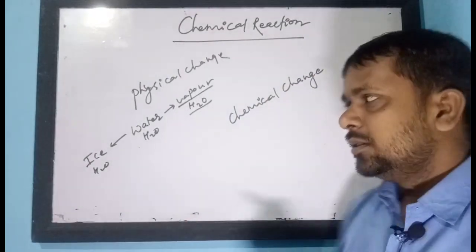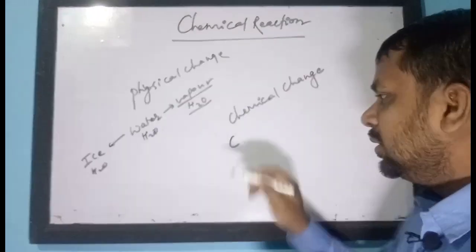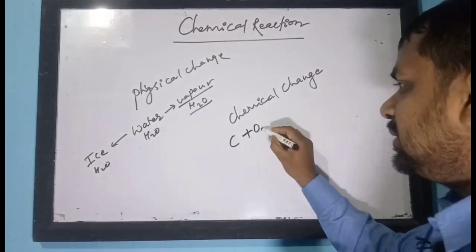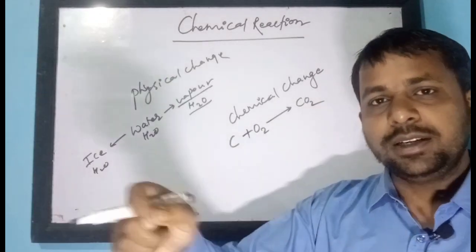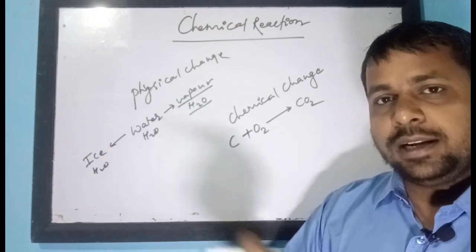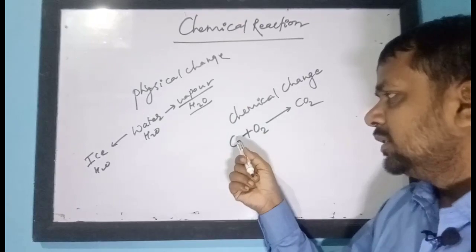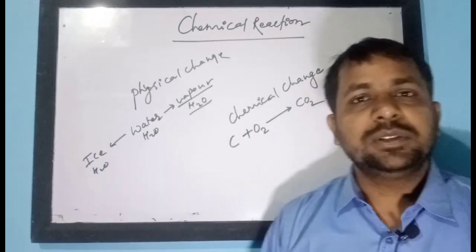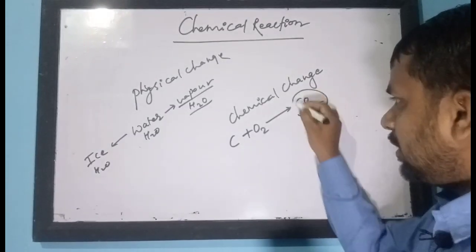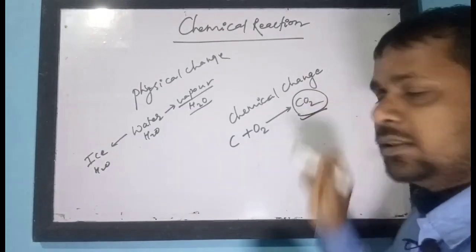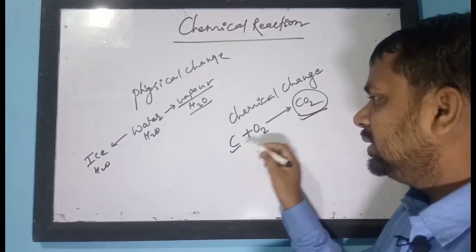Now let us see another example. Suppose there is wood that contains carbon. When we are burning that wood in the presence of oxygen, it is changing into CO₂. The carbon in the wood reacts with oxygen to form carbon dioxide. Here new substances are formed and they have a new molecular formula.